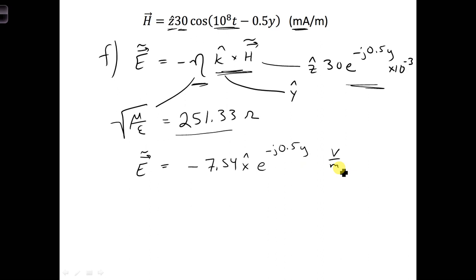And then for the very last step in part g, we want to convert this to the time domain. So the electric field, there's no phasor over now, it's just a vector, varies in y and t, and that is equal to minus x-hat 7.54. That doesn't change. But now we can use Euler's identity and put back e to the j omega t, change this to the time domain. So this will be cosine, omega t is the same as what it was for the h field, 10 to the eighth t, and we're left with minus 0.5y. And that's volts per meter again.